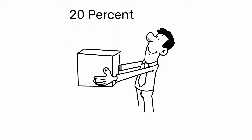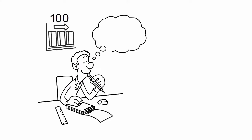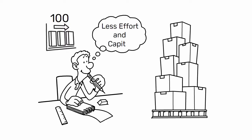But this is true only if demand also increases by 20%. If demand remains stable at 100, the only way to increase the efficiency of the process is to figure out how to produce the same number of units with less effort and capital.